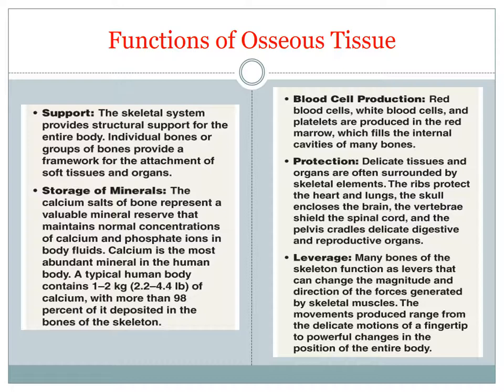The functions of the skeletal system are listed here. The skeletal system provides structural support for the entire body. The individual bones or groups of bones provide a framework for the attachment of soft tissues and organs. Delicate tissues and organs are often surrounded by skeletal elements, thus providing protection.